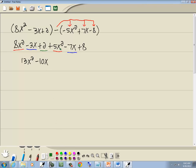And then our numbers, we got 2 plus 8, which gives us 10. So 13x² minus 10x plus 10 is our answer.